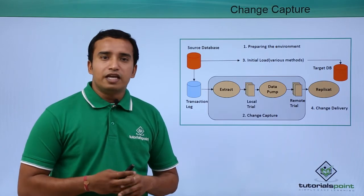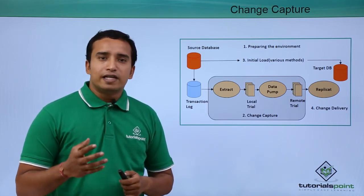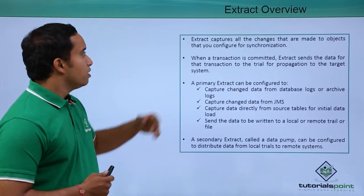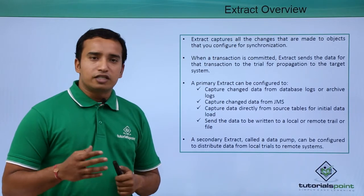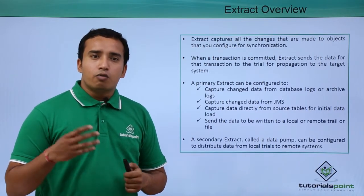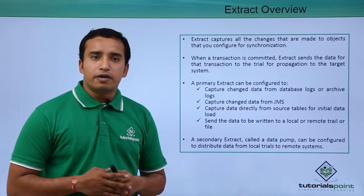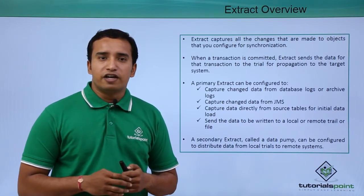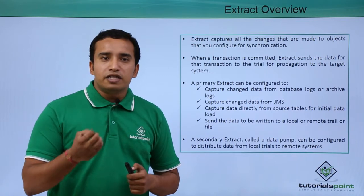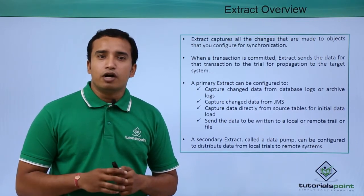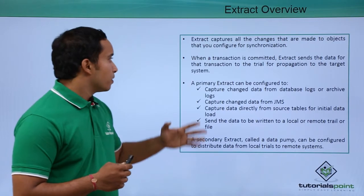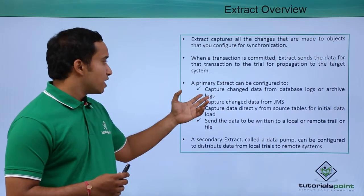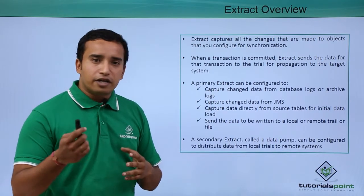Now we will be seeing what are the different parameters that we use while setting up the extract process. As you see in the overview, the extract process captures all the changes that are made to the database. Whatever changes are made to the database go to your redo log files, and your extract process reads those redo log files and copies the change data, putting it into a local trail file.